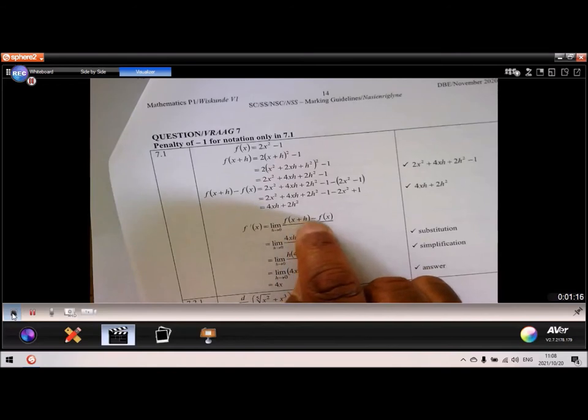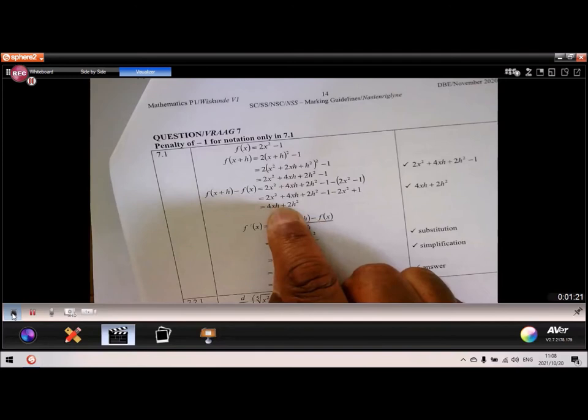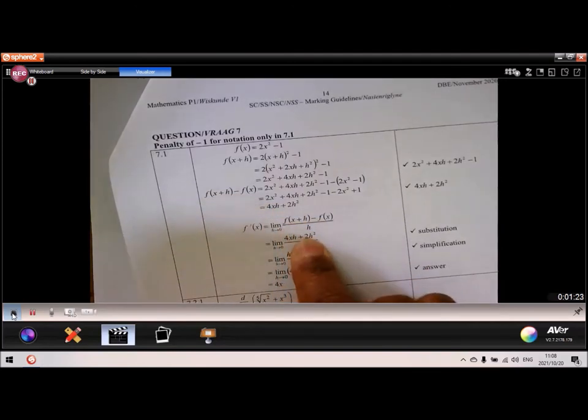So in the formula, remember I showed you earlier on, this is what I've just calculated now, which is this 4xh plus 2h squared over h.